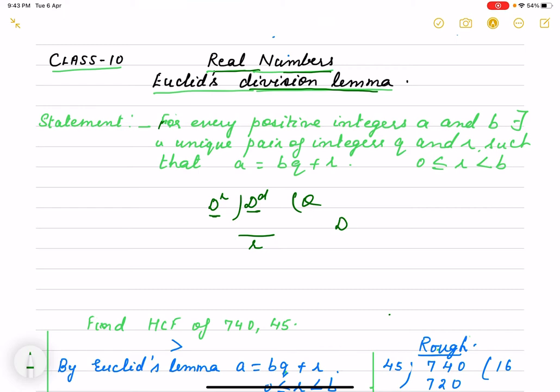So, we verify the division algorithm by dividend equals to divisor into quotient plus remainder.